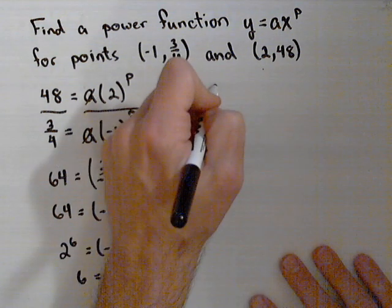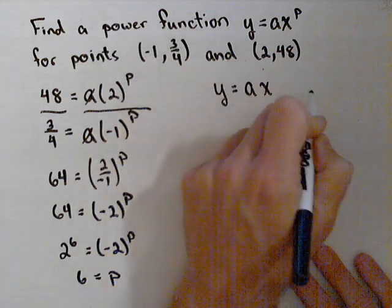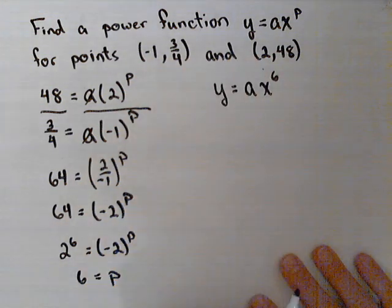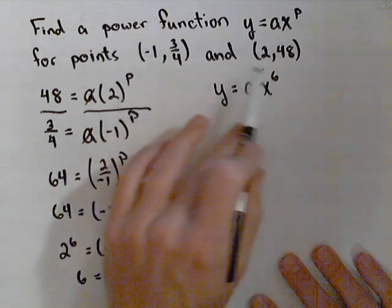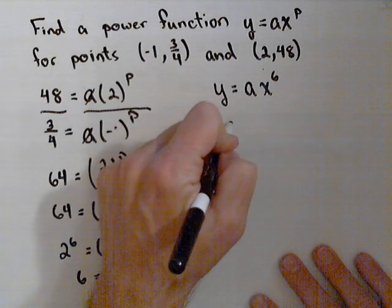So I can start to put together my function. I have y equals a x to the sixth. And now I need to find my a. So I can use either one of these points. This one will probably be a little easier.